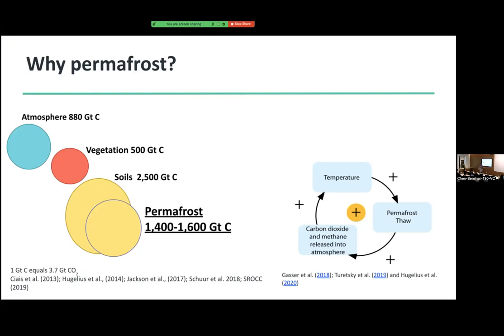First of all, permafrost is soil that's frozen the whole year round. And why do we care about thawing permafrost? Permafrost contains a lot of carbon. As you can see on the figure on the left, permafrost contains almost twice as much carbon as in the atmosphere and more than 40% of the carbon in the soil. And when permafrost thaws, it releases greenhouse gases. As you can see in the figure on the right, when permafrost thaws, greenhouse gases are released and those gases result in an increase in temperature, causing more permafrost thaw — a cycle that keeps going on.